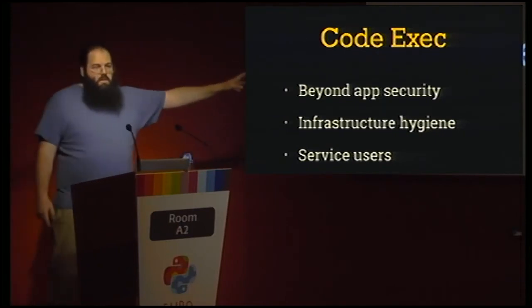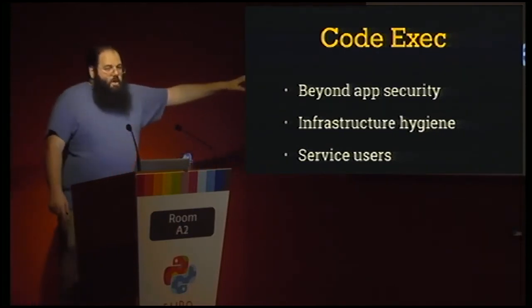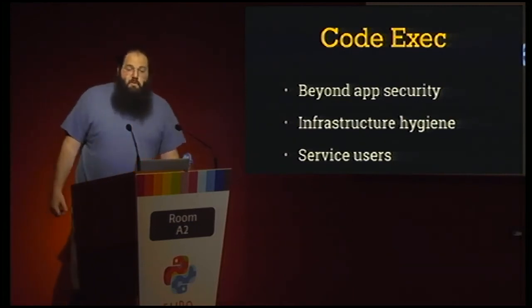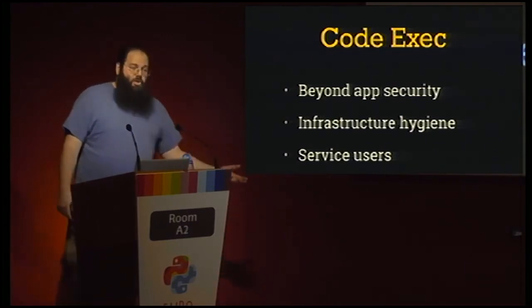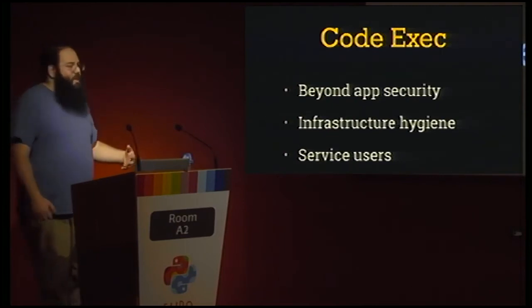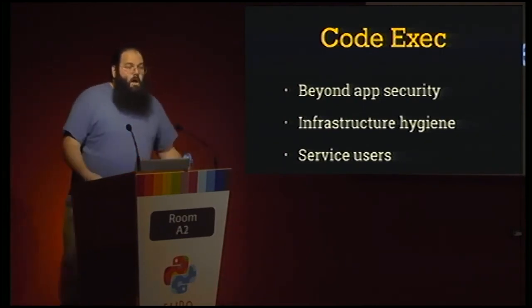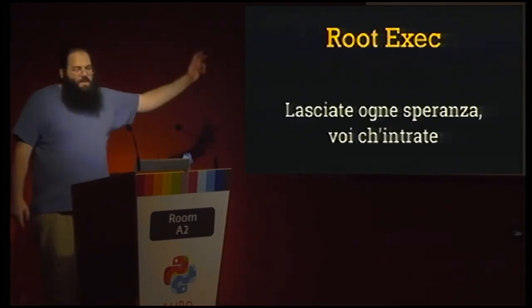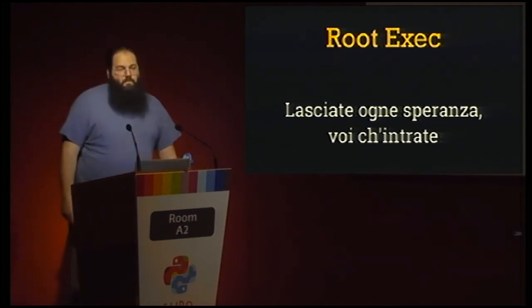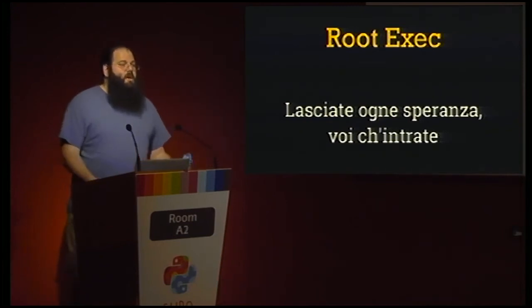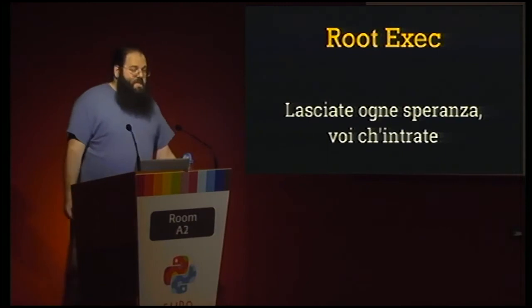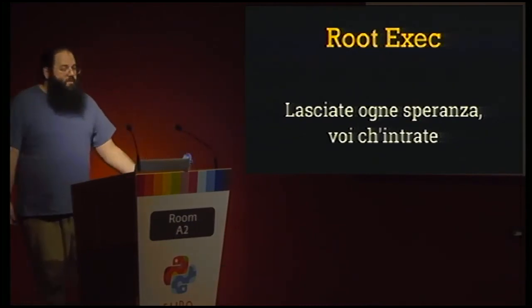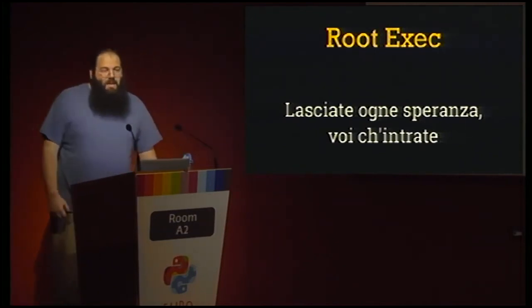Once an attacker has code execution, web app security no longer matters — the only thing left are structural protections. Use privilege dropping: make a key file only readable by root, have the application start as root, read the key into memory, then drop privileges. You can also use namespaces, chroots, and containers to limit runtime permissions. A root code execution vulnerability is approaching worst-case scenario. If there was a secret on the box, assume it is compromised. Being able to tell what secrets a box ever accessed is very useful so you can rotate all of them quickly.